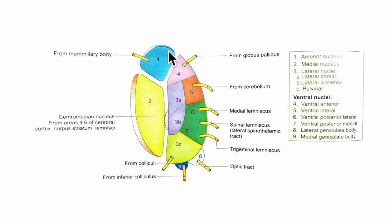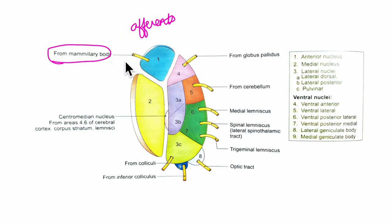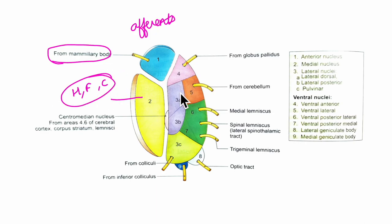This is another simplified diagram showing the nuclei of the thalamus and their connections. The anterior nucleus receives afferent impulses from the mammillary body via the mammillothalamic tract. The medial nucleus receives afferents from the hypothalamus, the frontal lobe of the cerebrum, the corpus striatum, and other thalamic nuclei. The lateral nuclei — that is the lateral dorsal, the lateral posterior, and the pulvinar — receive impulses from the precuneus and the superior parietal lobule of the cerebrum.